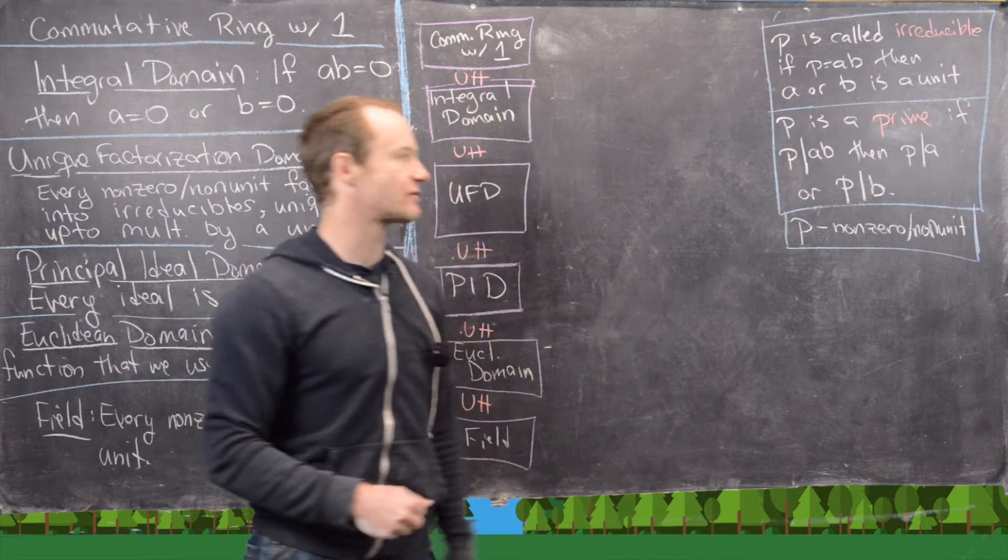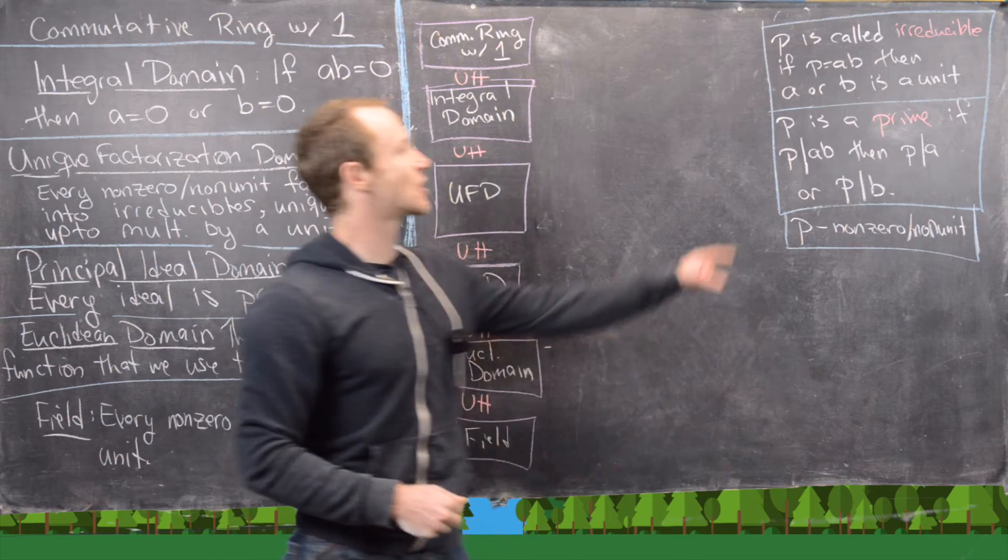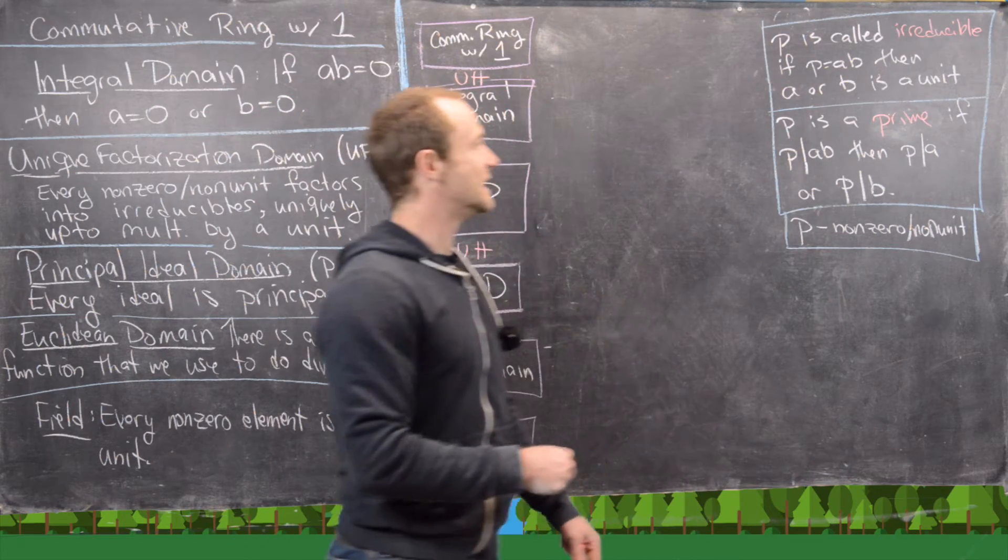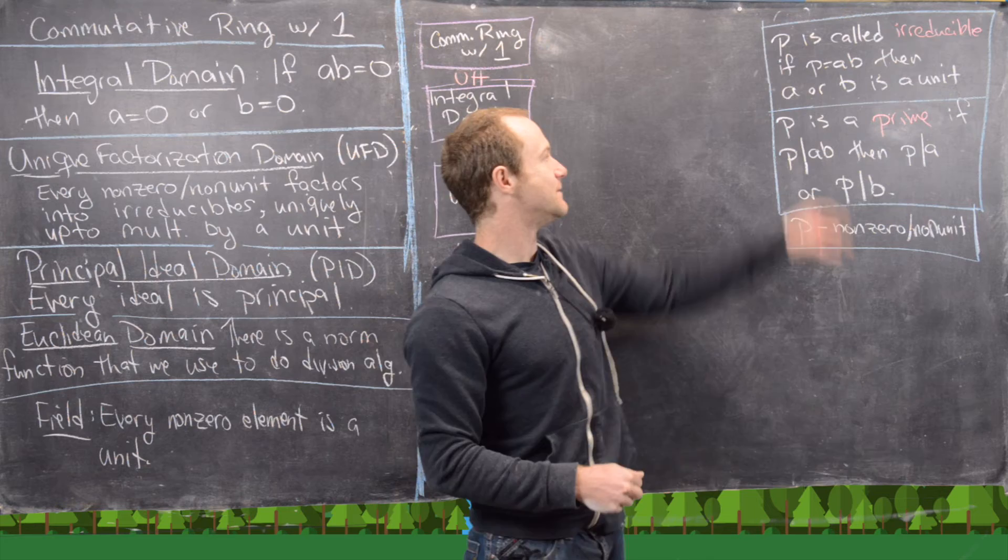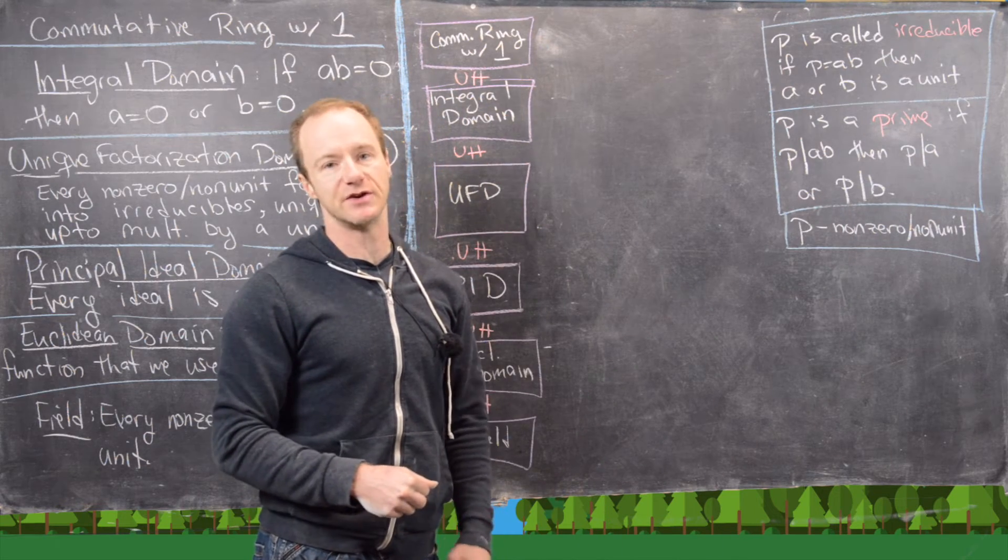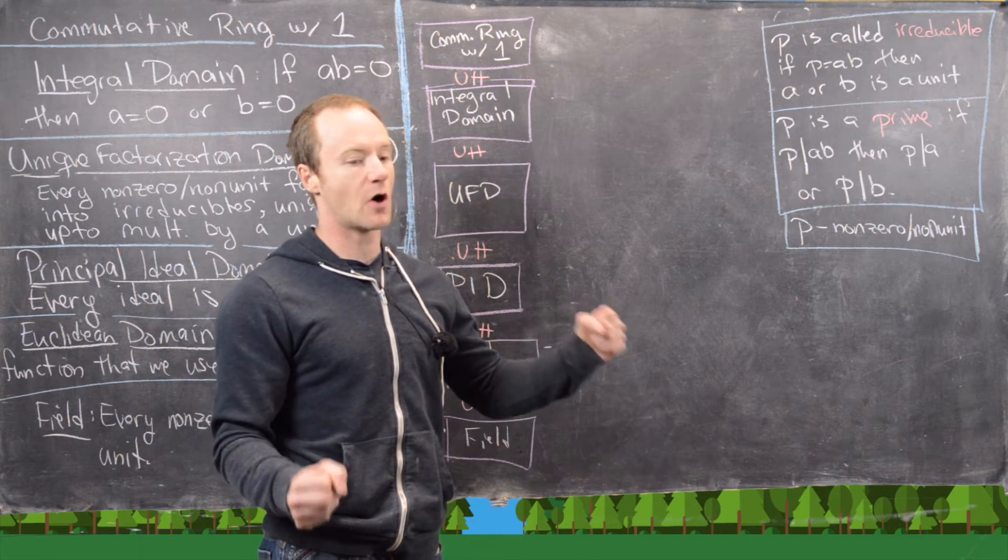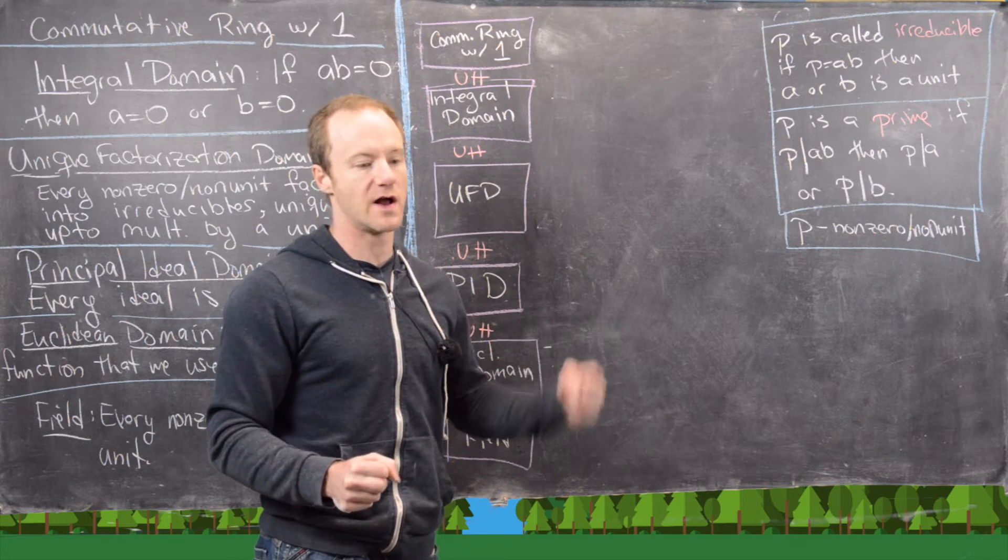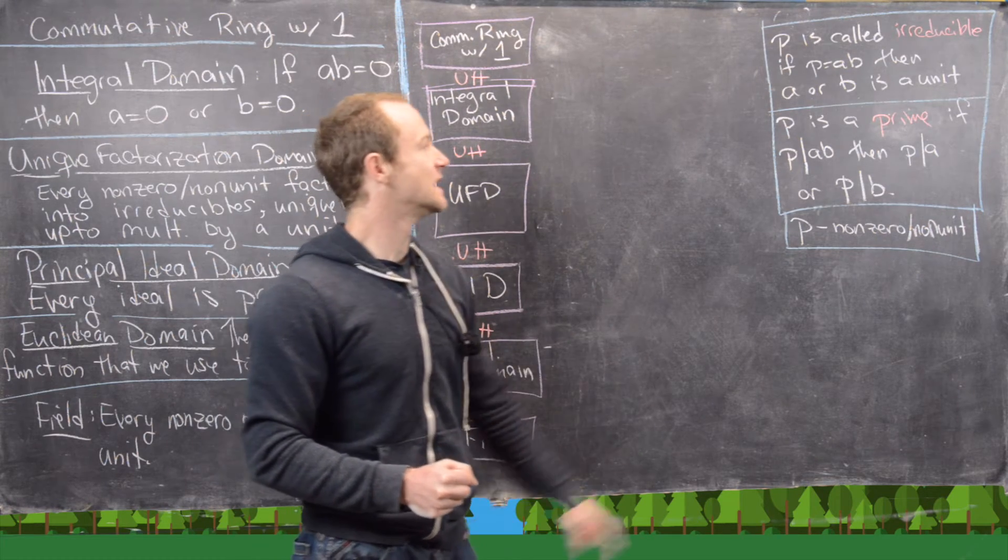So P, a non-zero, non-unit, is called irreducible if when P equals AB, then A or B is a unit. So in other words, if we can factor P, then the only way to factor it is where one of the parts is a unit.